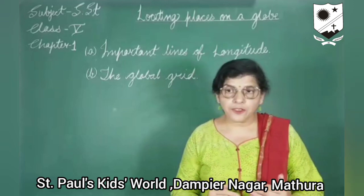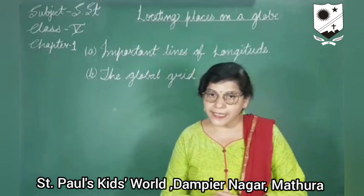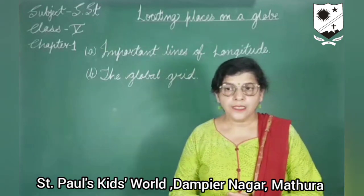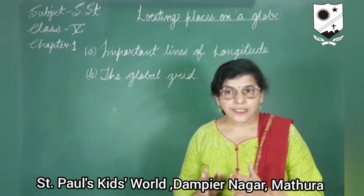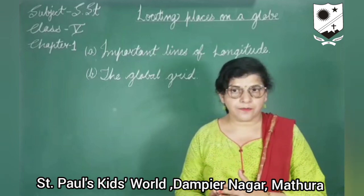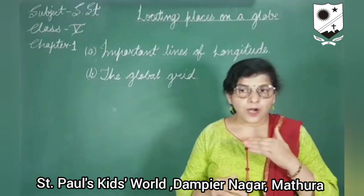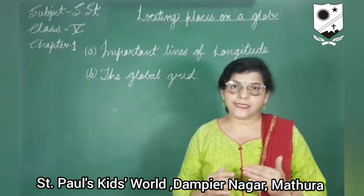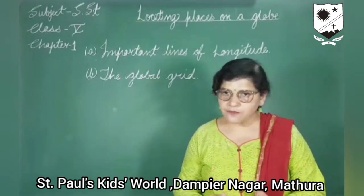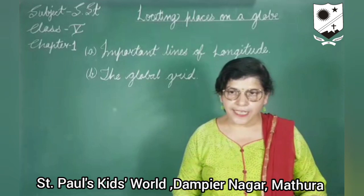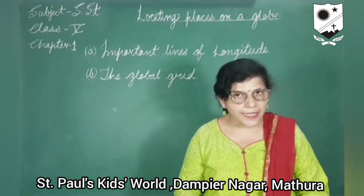Let me give you one example. New Delhi is located at the intersection of latitude 28.6 degrees north and longitude 77.2 degrees east. So its exact location is given by the coordinates 28.6 degrees north and 77.2 degrees east. With this, our first chapter is finished. Try to solve the worksheets that I have already sent you. Thank you.